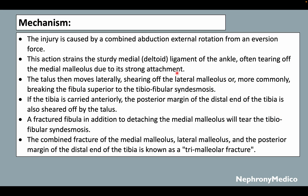The mechanism: the injury is caused by a combined abduction and external rotation from an eversion force. This action strains the sturdy delta ligament of the ankle, often tearing off the medial malleolus due to its strong attachment. The talus then moves laterally, shearing the lateral malleolus or more commonly breaking the fibula superior to the tibiofibular syndesmosis.